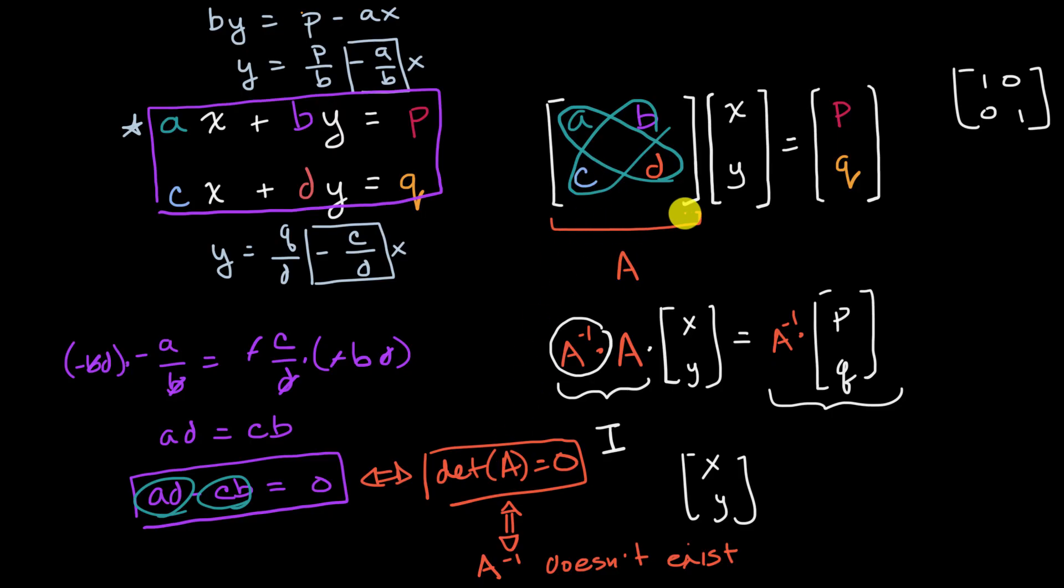we're getting the same result, not viewing matrix A as a transformation, but viewing it as a representation of a system of linear equations like this. But once again, we got the same idea, that if the determinant of A is equal to zero, you're not going to get a nice, clean solution here, and so the inverse does not exist.